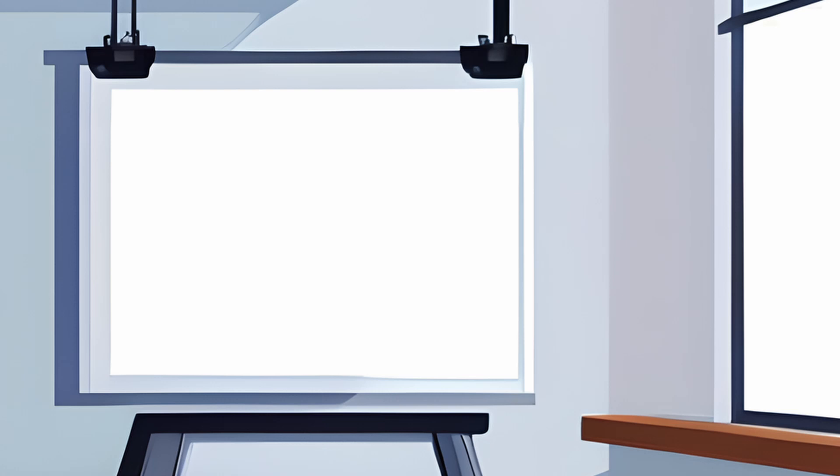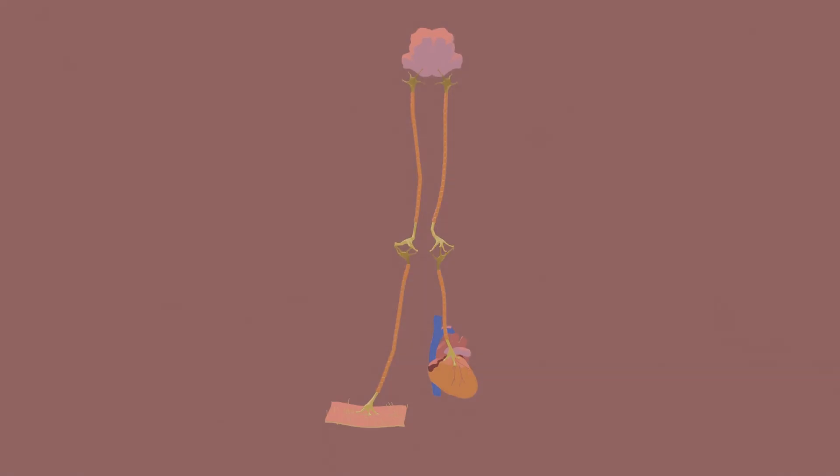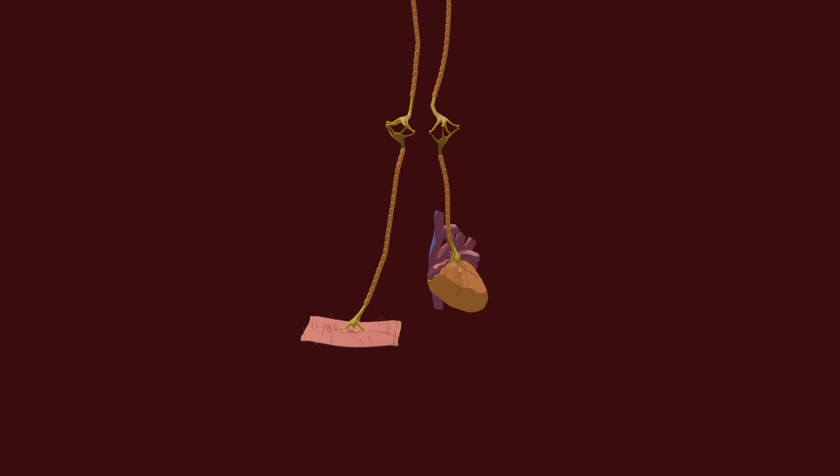The typical example is when you have heart damage and you feel some pain in your arm. The leading theory behind why this is happening is called the convergence projection theory, and I'll try to illustrate it with this animation.